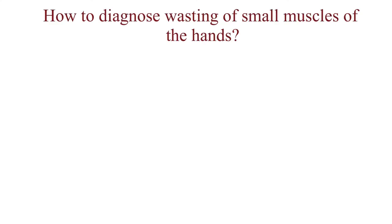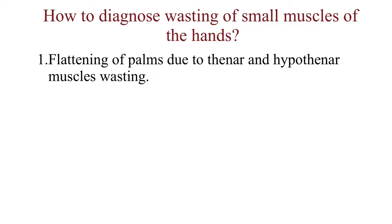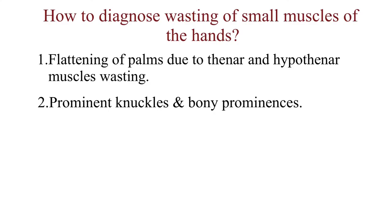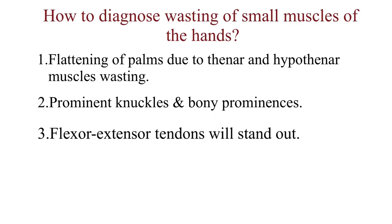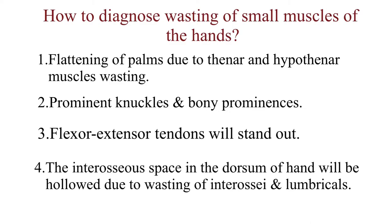How do we diagnose wasting of small muscles of the hand on examination? There will be flattening of the palms due to thenar and hypothenar muscle wasting. We can see prominent knuckles and bony prominences. Flexor and extensor tendons will stand out. The interosseous space in the dorsum of the hand will be hollowed due to wasting of the interossei and the lumbricals.